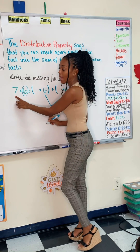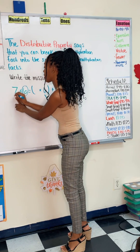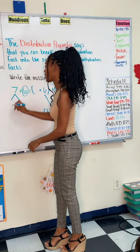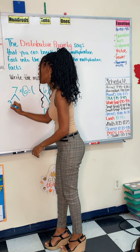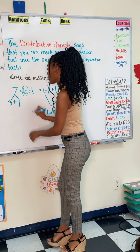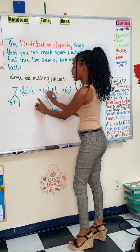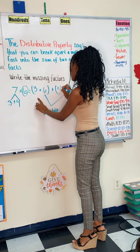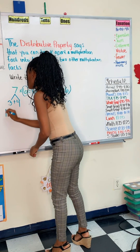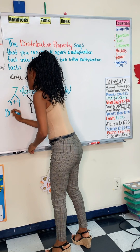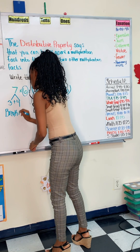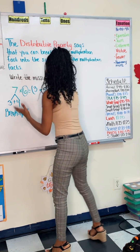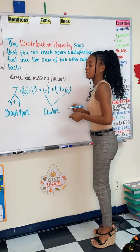Which means I'm choosing seven as my number to break apart. I can break apart seven into three plus four. I simply put my three here and my four here, and I chose this as my break apart number. And my expression is done.